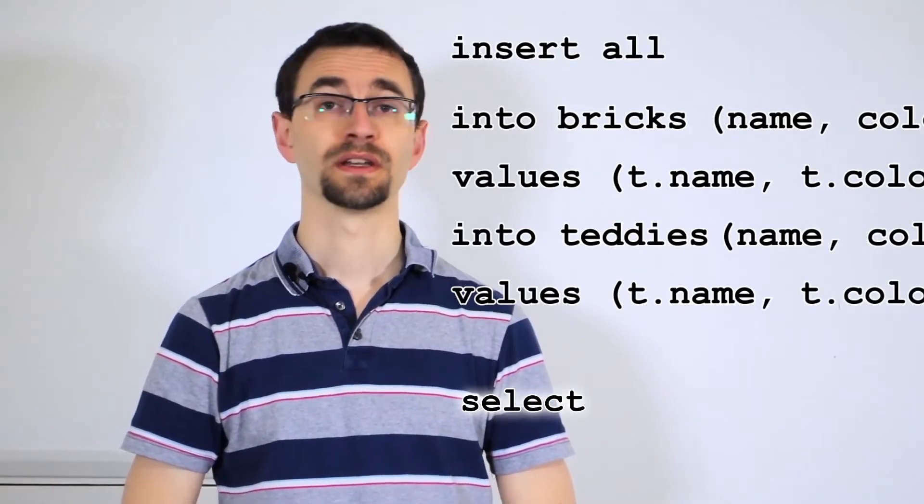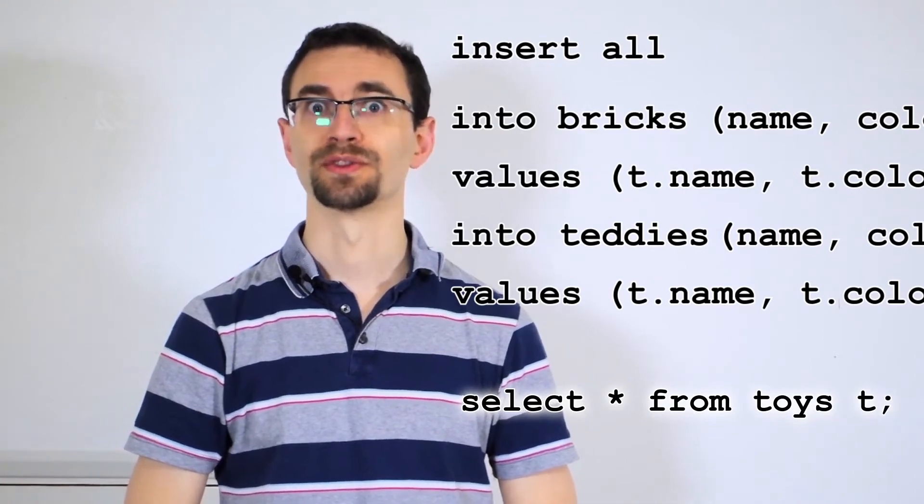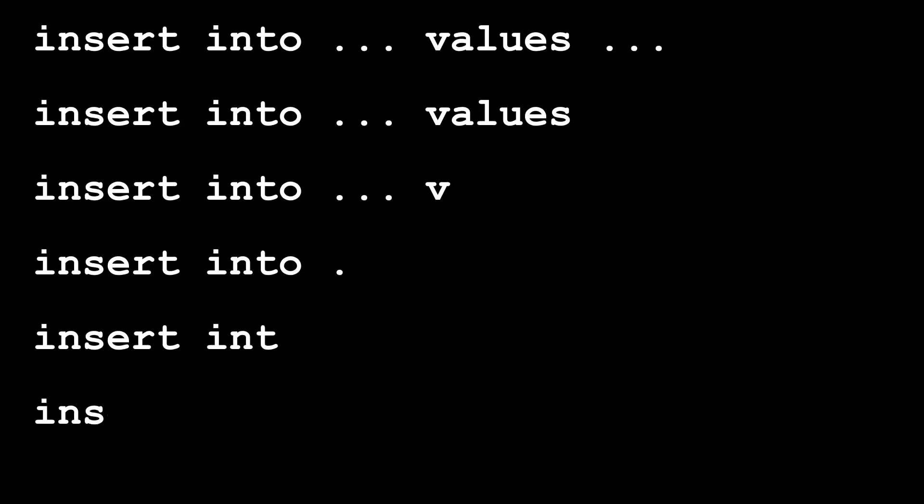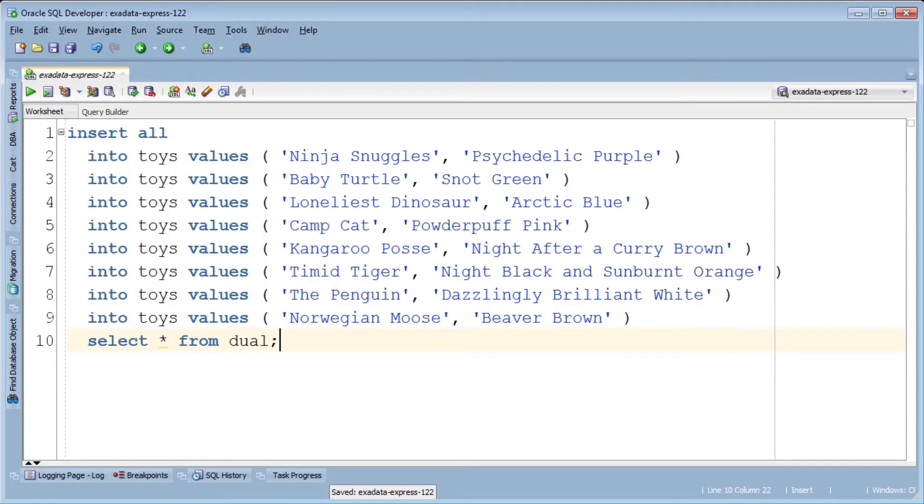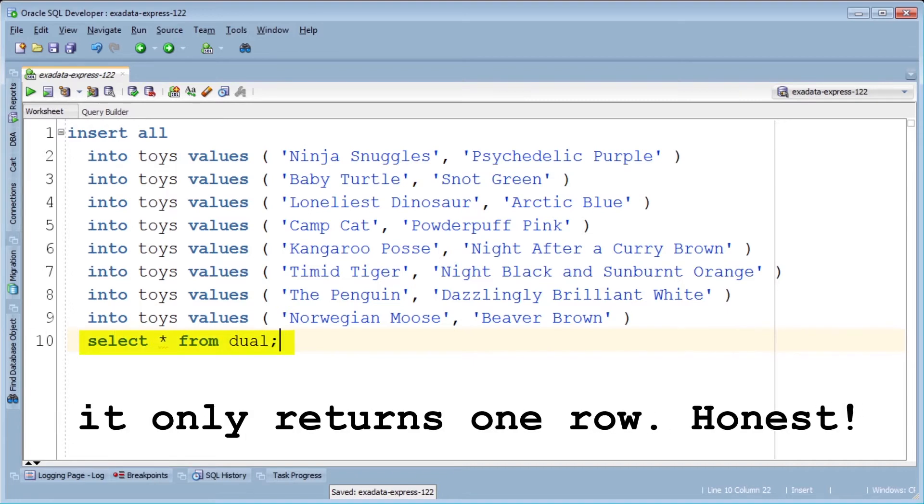Like multi-row inserts, you need to have a query which is your data source. You can also use this technique to change several single row inserts into one statement. Just list out all the data points in the values clause and have a dummy query that returns one row.